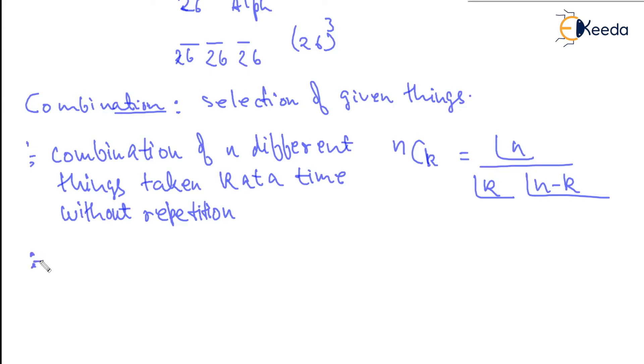With repetition, this will be n plus k minus 1 choose k. So this is factorial n plus k minus 1 by factorial k and factorial n minus 1. So this is without repetition, this is with repetition - combination of n different things taken k at a time.